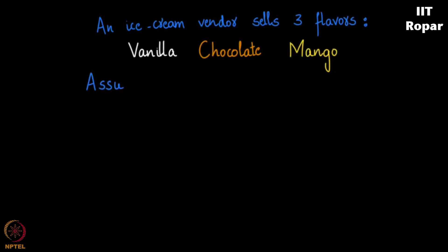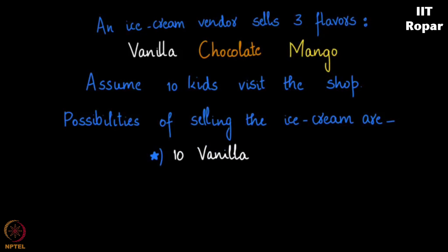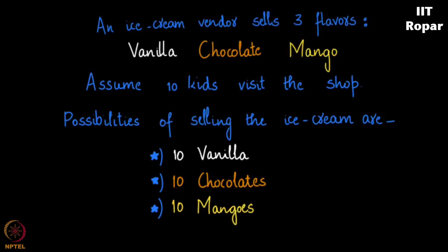Assume ten kids visit his shop and they all take the flavours of their choice. The shopkeeper notes that there is a possibility that he sells these ten kids ten ice creams, all of them being vanilla, or all of them could be chocolate, and all of these could be mango. Or another possibility is three vanilla,